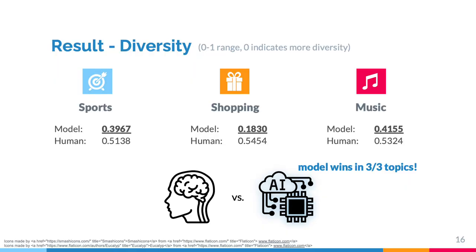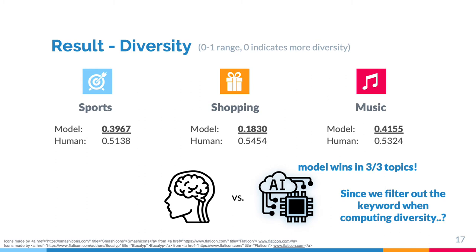For diversity, a number closer to 0 indicates greater diversity, as the numbers show the similarity of the generated inputs. The model was able to come up with more diverse answers in all three domains, and the gap is biggest in the shopping domain. We think that filtering out the keyword when computing diversity might have influenced the results, as all the model-generated inputs contain the topic keyword.